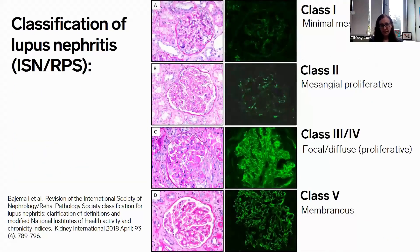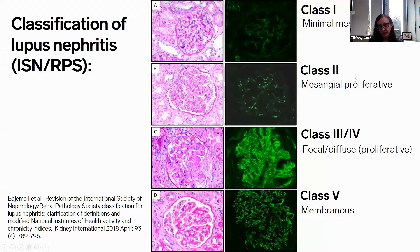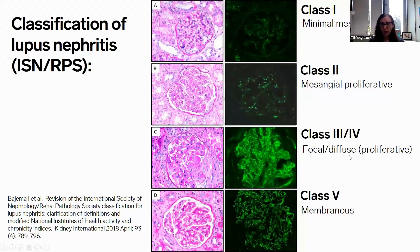The classification of lupus nephritis is established by the International Society of Nephrology and Renal Pathology Society classification system. There are six classes. Class one is minimal mesangial lupus nephritis, with mesangial immune deposits but no proliferative activity. Class two, mesangial proliferative glomerulonephritis, shows mesangial hypercellularity without other proliferative changes or significant subepithelial immune deposits. Classes three and four are focal or diffuse lupus nephritis, containing proliferative glomerular lesions.